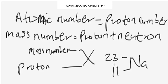To summarize: an atom is the smallest particle of an element that can take part in a chemical reaction. Atoms are made up of protons, electrons, and neutrons. The proton is positively charged, the electron is negatively charged, and the neutron is neutral. In a neutral atom, the proton number equals the electron number. In an ion, they are not equal. Atomic number equals proton number; mass number equals proton number plus neutron number.